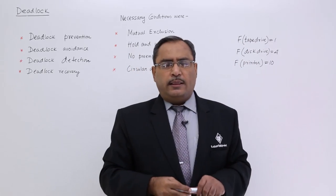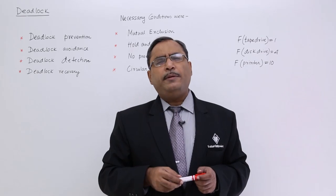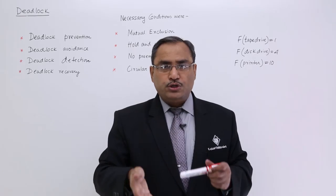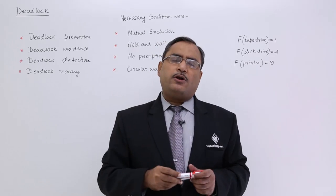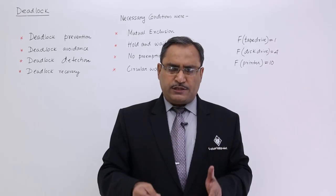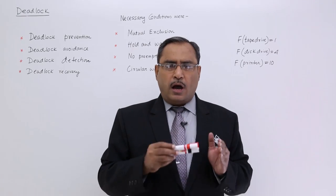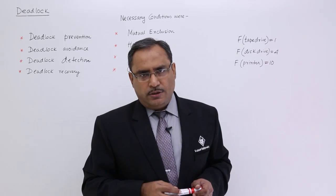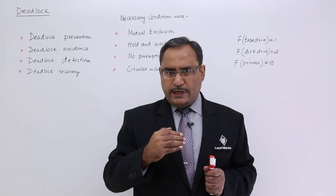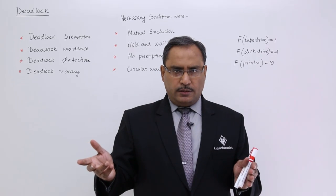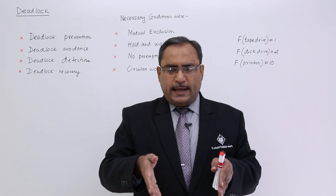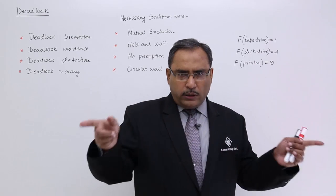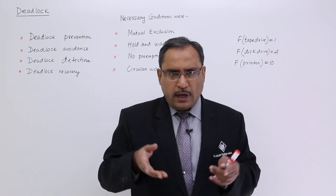Another solution: suppose I am having R1 and R2, and during execution I require R3 as an additional resource. Then release R1 and R2, and place a fresh request to grant instances of R1, R2, and R3 for all of them. So the two solutions for hold and wait are: before initiating, get all the resources then start; and during progress, if you require any additional resource, release the previously allocated resources and take all resources in one shot, then proceed.